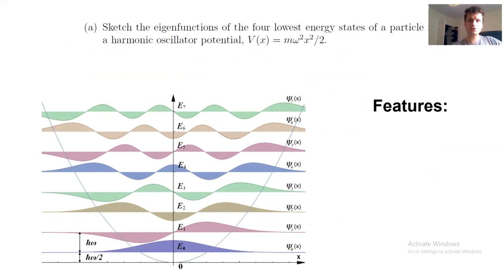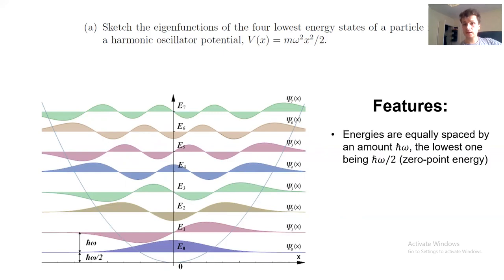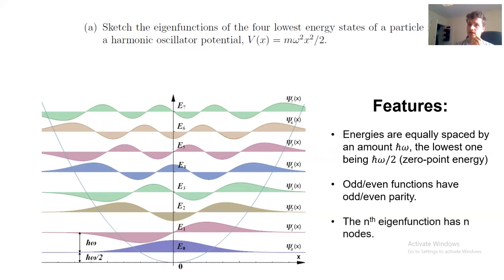The important thing to remember here is that there are some general features. The first one being that the energies must be equally spaced, and any difference between two consecutive states is h bar omega. Obviously the ground state is not h bar omega, but one half h bar omega. The other feature has to do with the parity of these functions. Even functions are symmetric with respect to the origin, while odd functions are antisymmetric. Finally, notice that each eigenstate has the same number of nodes as the order they occupy. Remember, a node is a point at which a function equals zero.